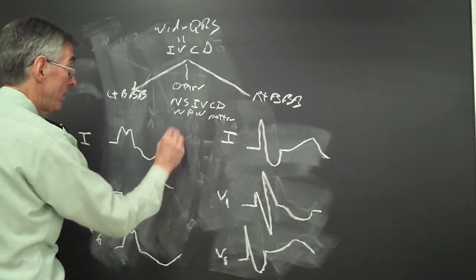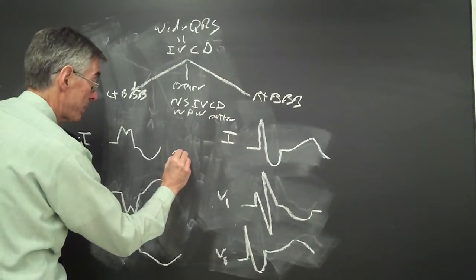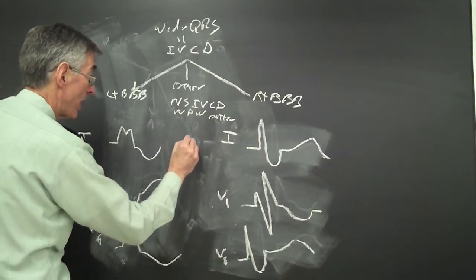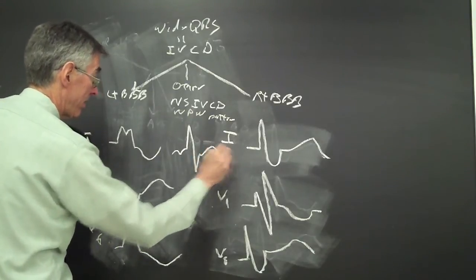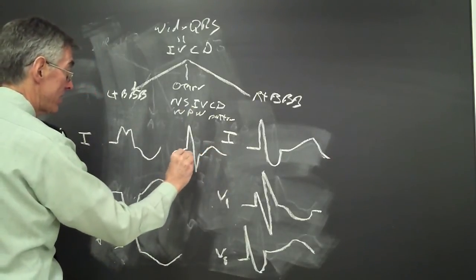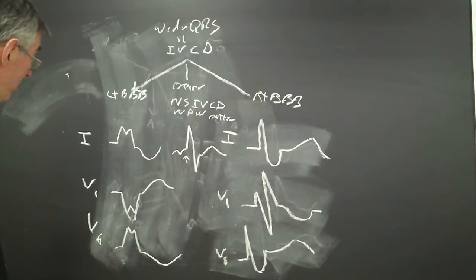In Wolf-Parkinson-White, you'll see a short PR, a delta wave, a wide QRS. So, that is the delta wave there. This is how I look at wide QRS rhythm.